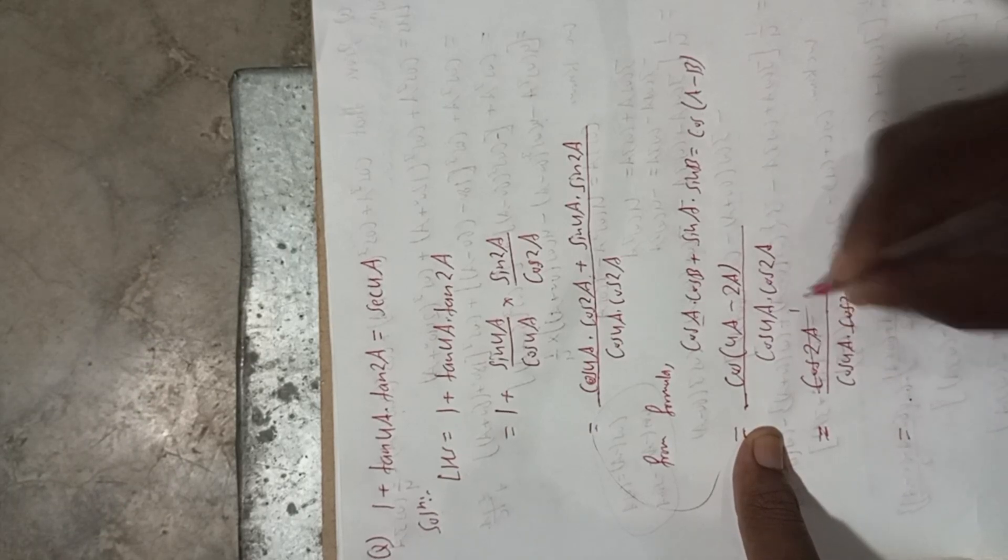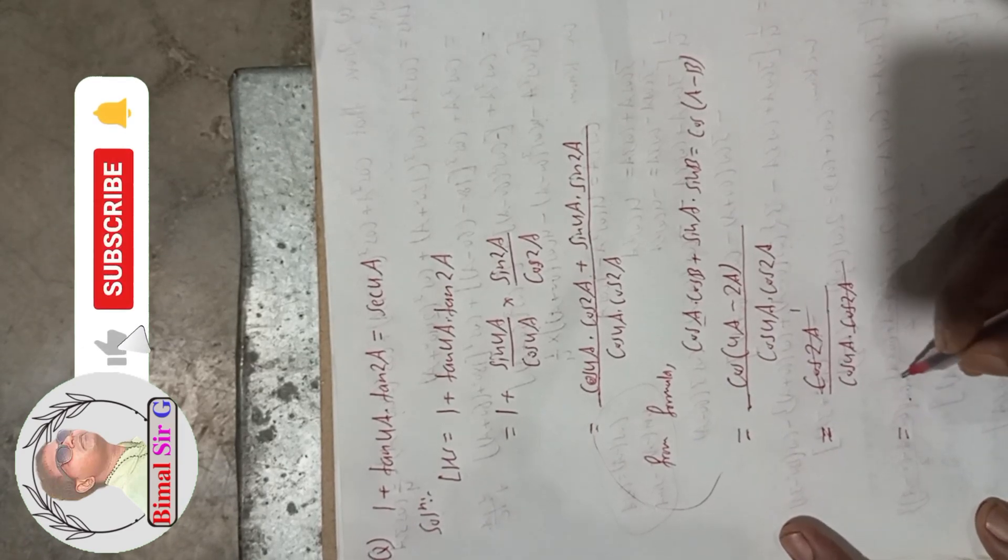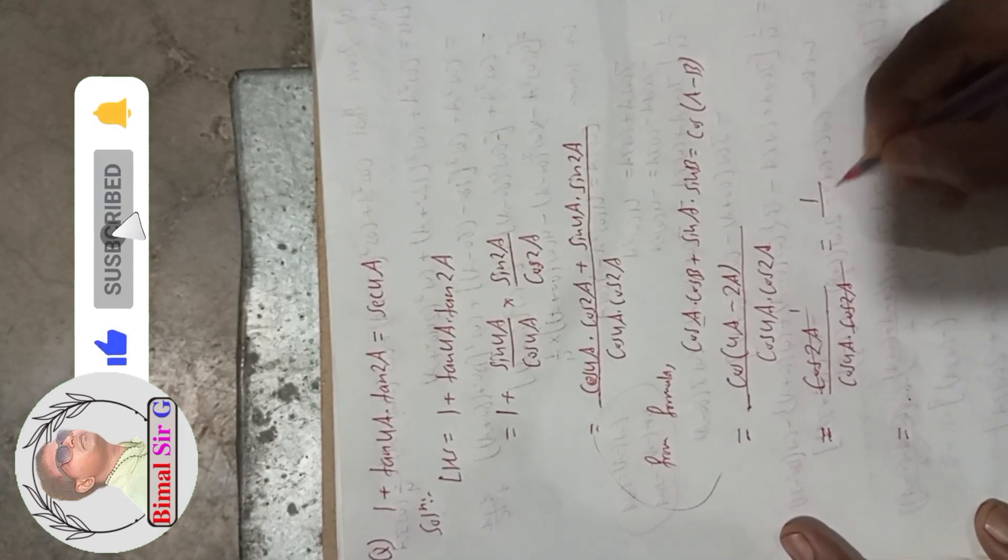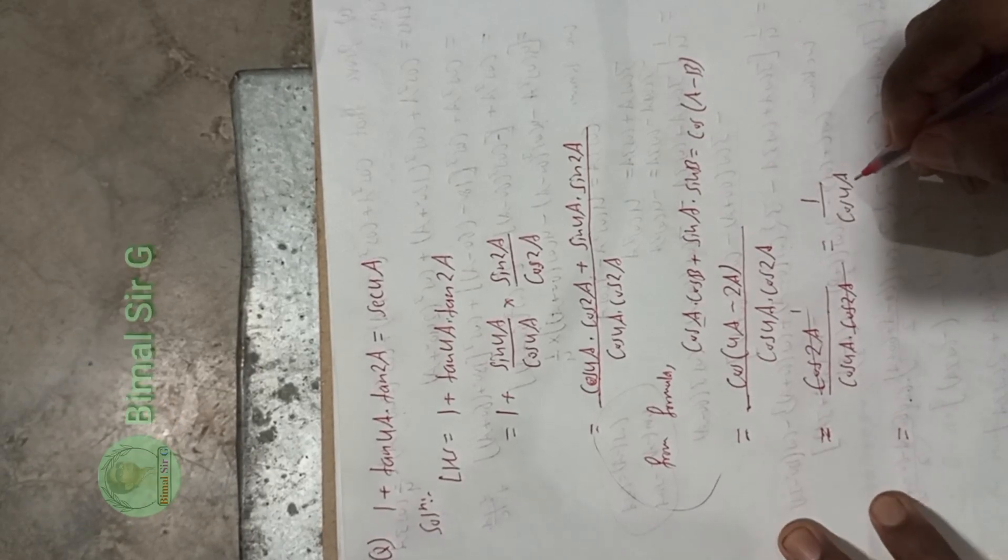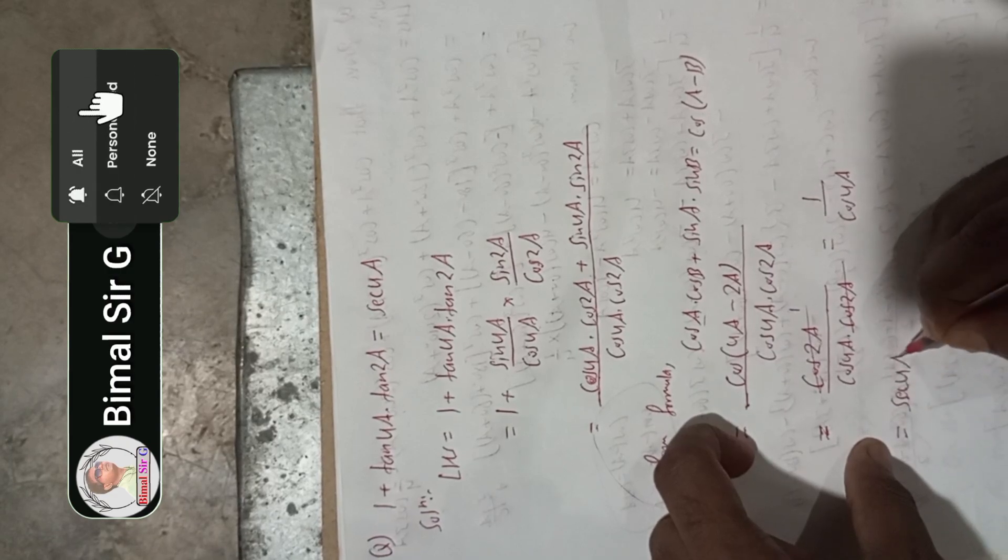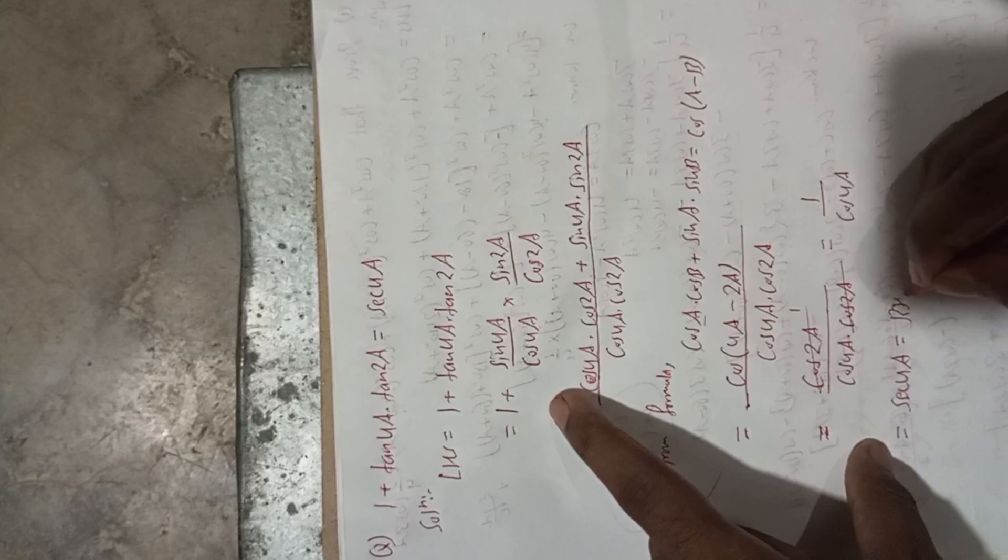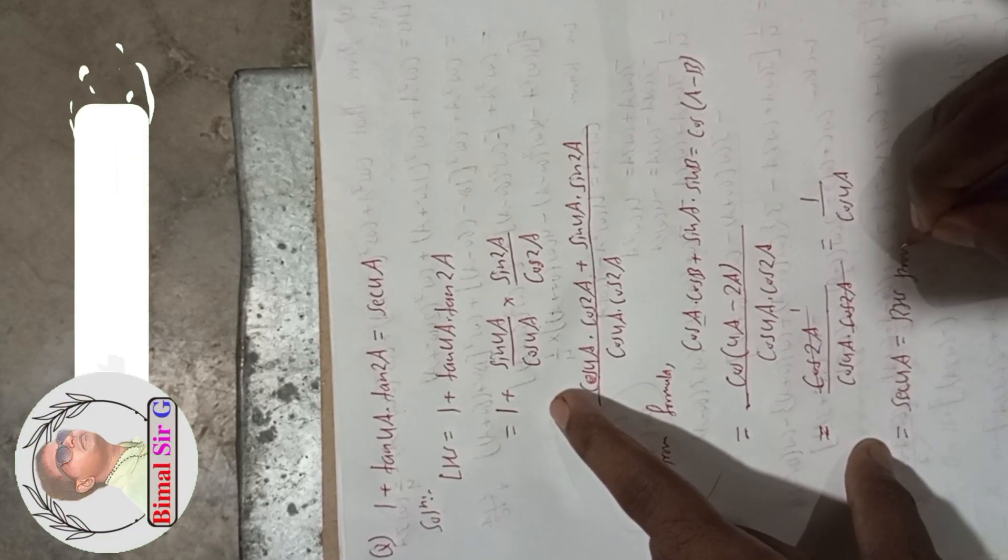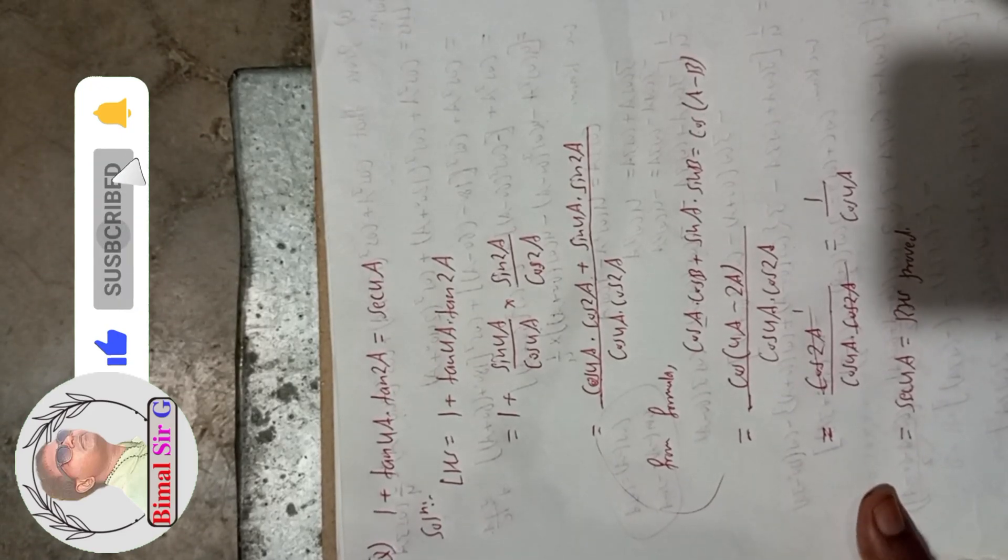1/cos(4a) is equal to sec(4a), which is our RHS. Hence proved. This is the complete solution for this question.